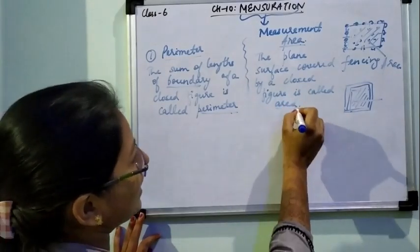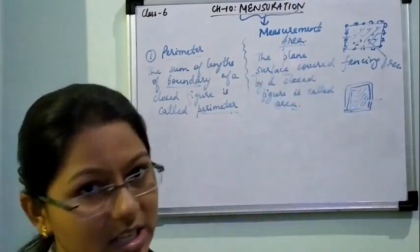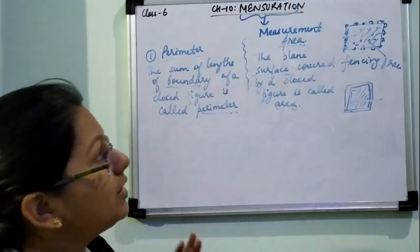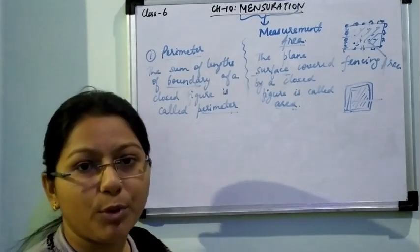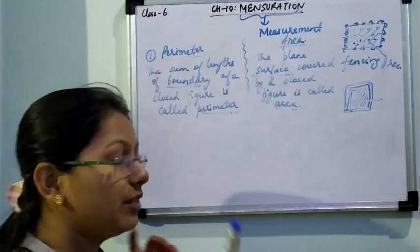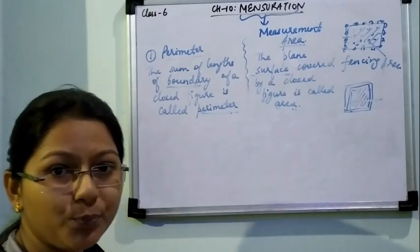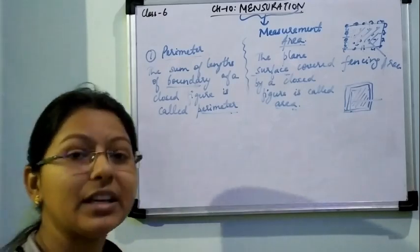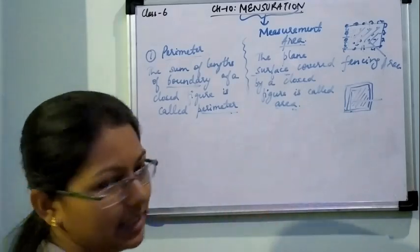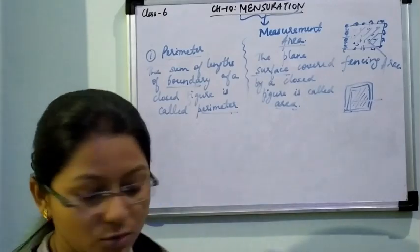When we think of area, our mind should think: surface. The plain surface covered by a closed figure is called area. Whenever you read a problem, first think whether you have to find perimeter or area. The formulas we will learn later.